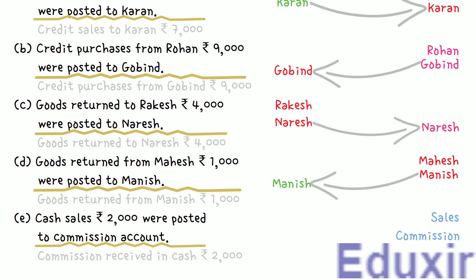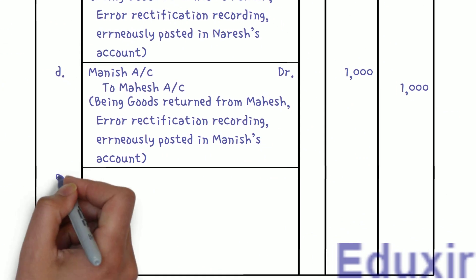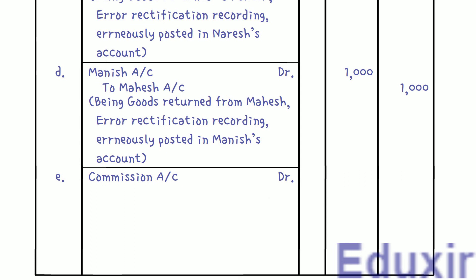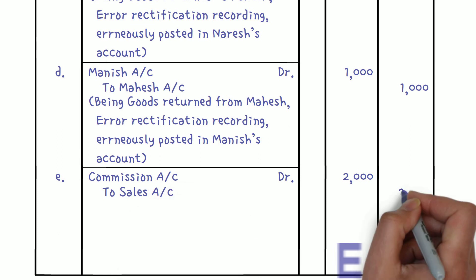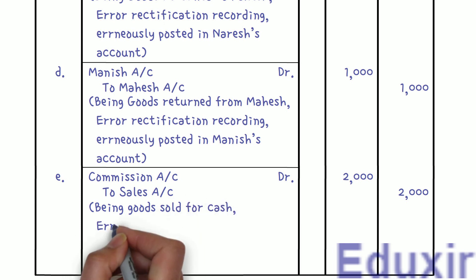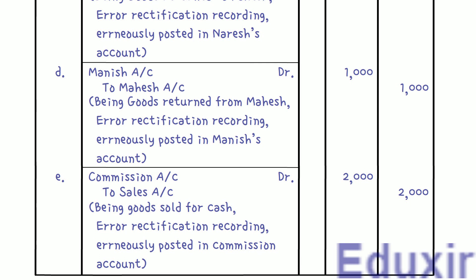To summarize: we should credit the sales account as it was not credited earlier. Also, as commission account is credited by error, we need to debit commission account. Journal entry: commission account Dr. Rs. 2,000, and credit sales account Rs. 2,000. Narration: goods sold for cash — error rectification recording erroneously posted in commission account. With that, we have completed the journalizing of all the error rectification entries. That is the end of this solution.